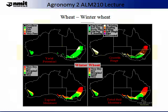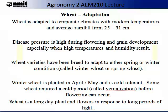The slide on screen displays crop conditions for Australian winter wheat. The geographical map shows yield potential, growth stage, topsoil moisture and total soil moisture. You will notice that in areas where there is reasonably good topsoil and total soil moisture, yield potential seems to do well. Wheat is adapted to temperate climates with moderate temperatures and average rainfall from 25 to 51 cm. Disease pressure is high during flowering and grain development, especially when high temperatures and humidities result. Wheat varieties have been bred to adapt to either spring or winter conditions and are called winter wheat or spring wheat.